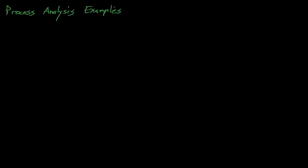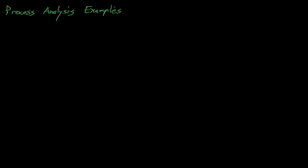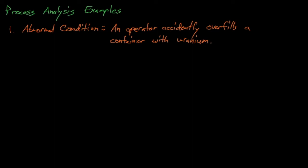Let's walk through some example double contingency principle scenarios to explain what I mean by this. Say that our facility handles containers filled with UO2 powder, and let's consider a scenario where a worker accidentally overfills one of our containers. In this case, we have one credible abnormal condition, which is the worker accidentally overfilling the container. And this one condition causes one change in process conditions, a loss of mass control in the container. So here, one credible abnormal condition causes exactly one change in process conditions.